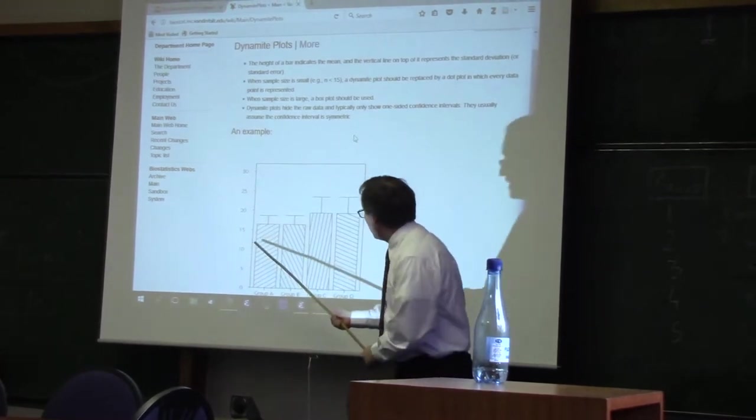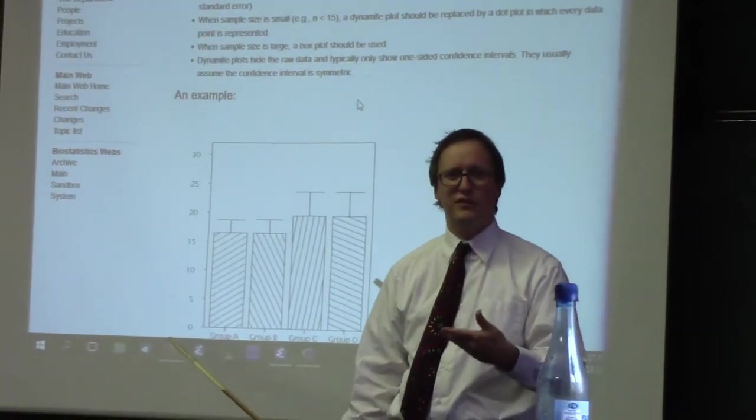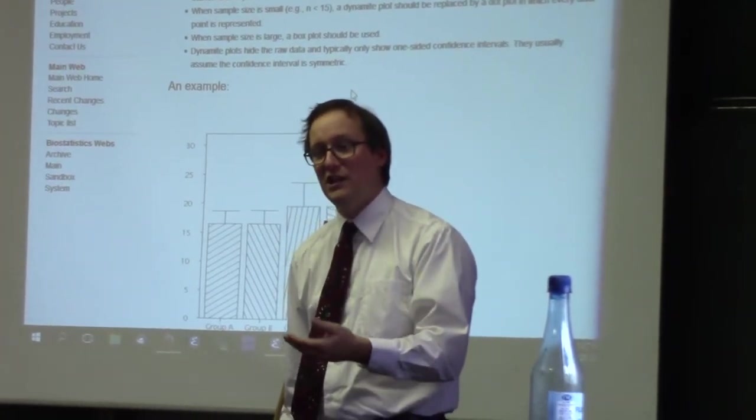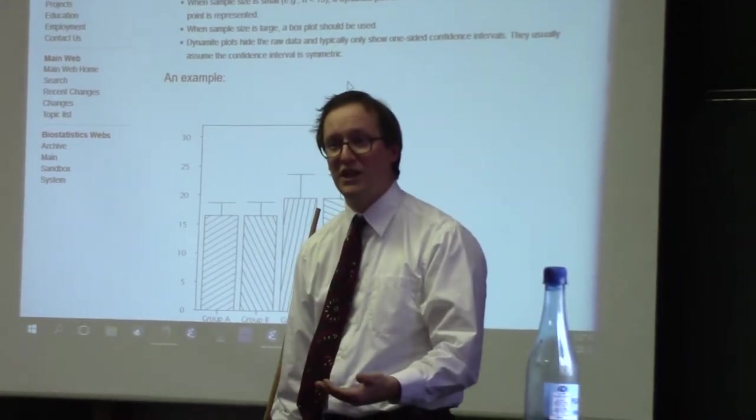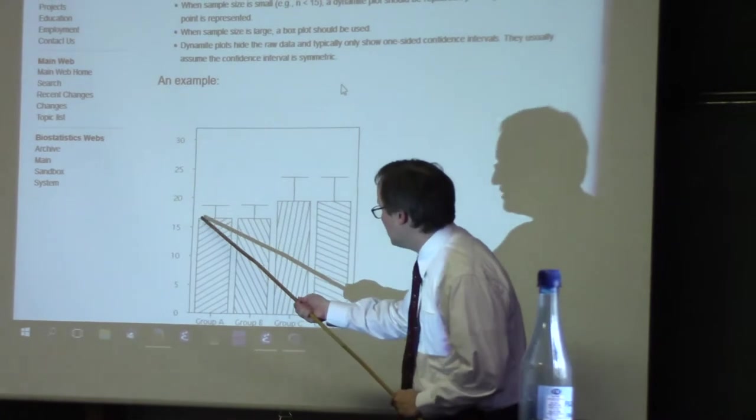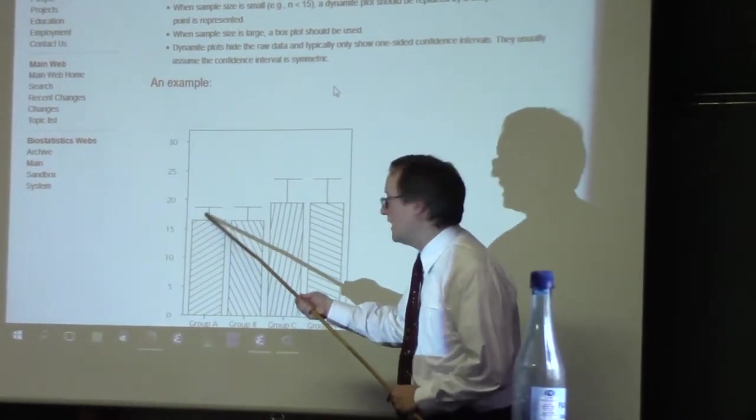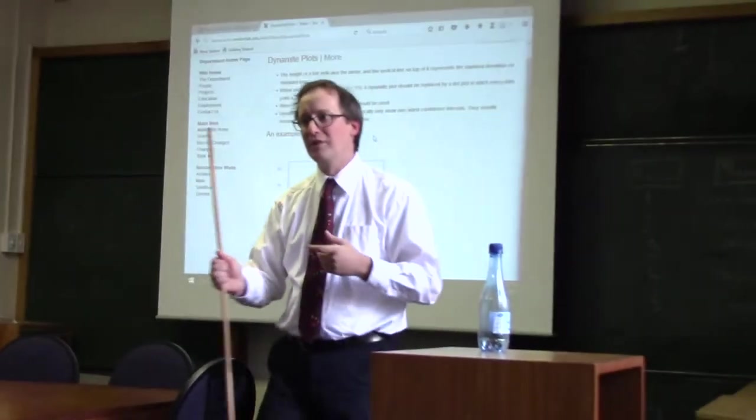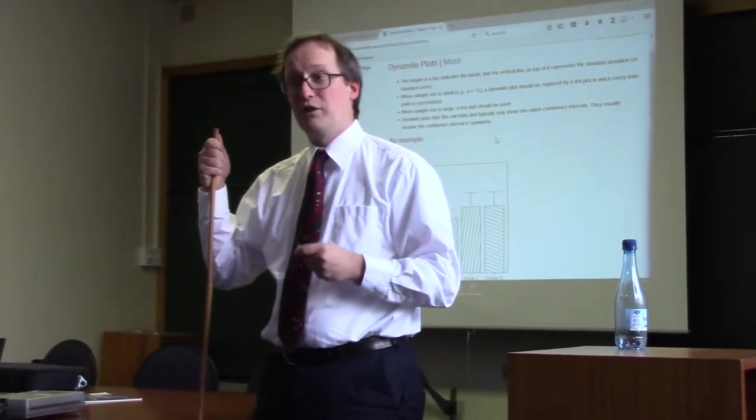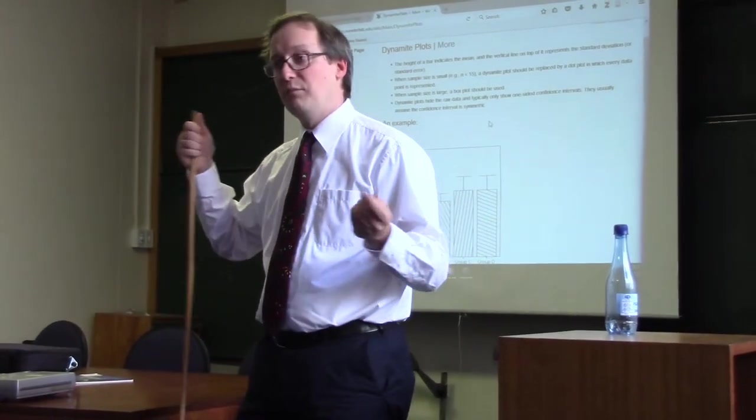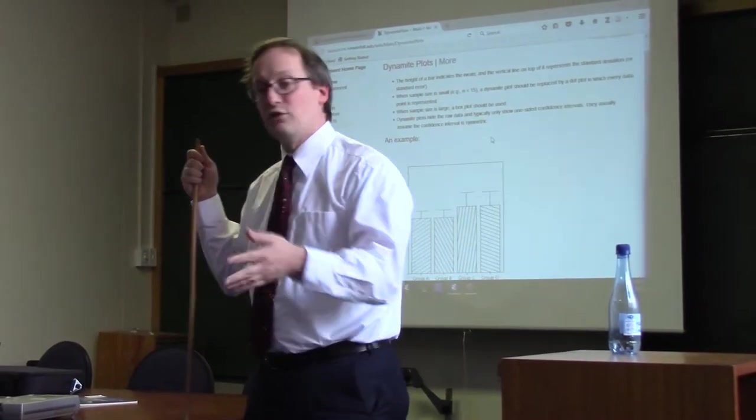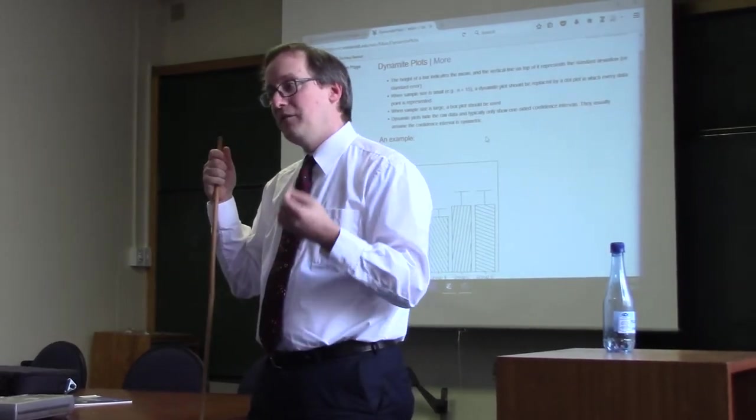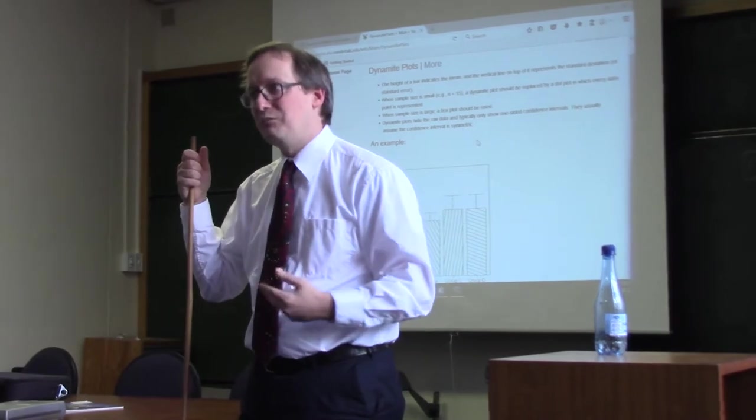Sometimes they're using a standard error. But generally speaking, these plots are presented in such a way that it's not really clear which of those three estimates they may be using. The other problem, of course, is that if you show a whisker pointing up for some depiction of the variance of that sample, you are sort of implying that the same distance down is used to describe the downward variance from this mean. But in general, people don't specify whether they're showing a mean or a median or a mode. And people don't specify whether they're showing a standard error or a standard deviation or an inner quartile, for that matter, or a confidence interval. So these dynamite plots tend to get on people's nerves.